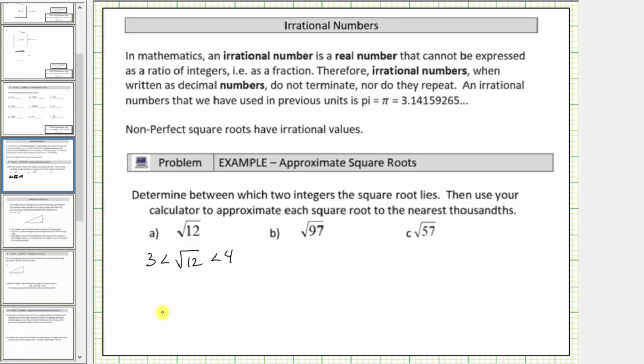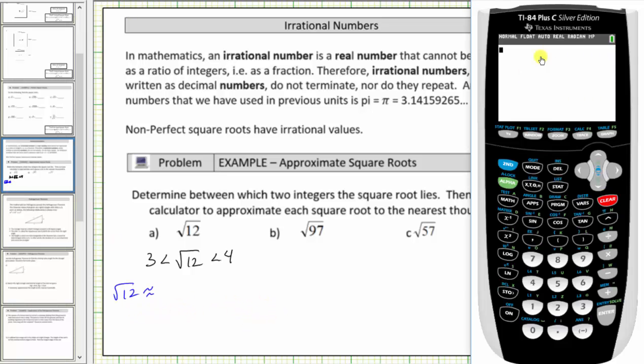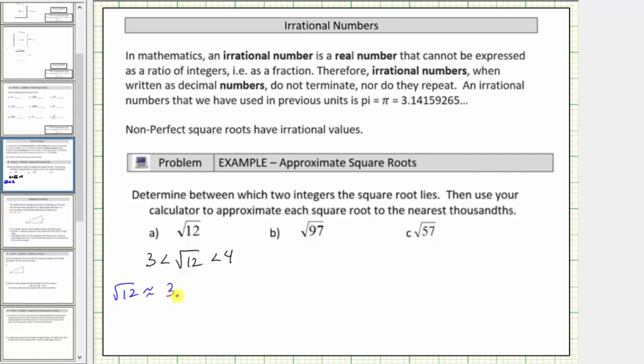Now we'll get our decimal approximation using the calculator. On this calculator, the square root key is the second x squared, then we enter 12, press enter. To round to the thousandths place value, we round to three decimal places. Notice how there's a one in the fourth decimal place, and therefore we round down. The square root of 12 is approximately 3.464. Notice how this value is between 3 and 4.